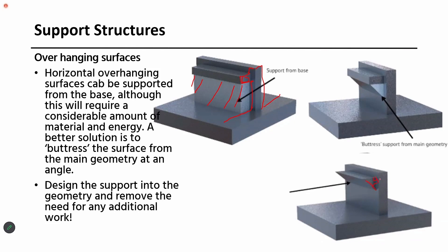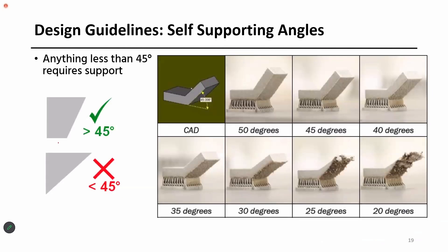Anything above 45 degrees doesn't need a support structure. You can see parts 3D printed with 50 degrees, 45 degrees, and 40 degrees overhang angles. Anything more than 45 degrees doesn't need any kind of support structure. But if you come down below 45 degrees, this surface may not be good — and if the angle is very low, you may not get that section at all. It is very challenging to get a 3D printed part in that section.